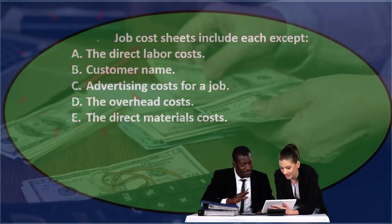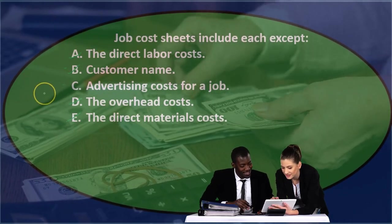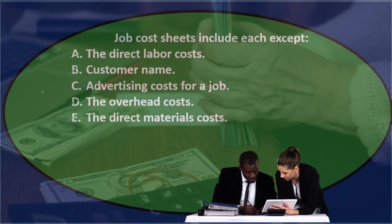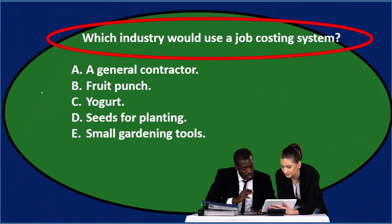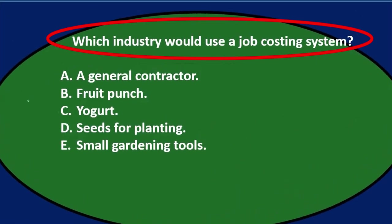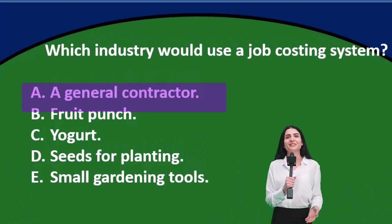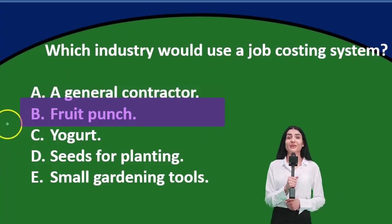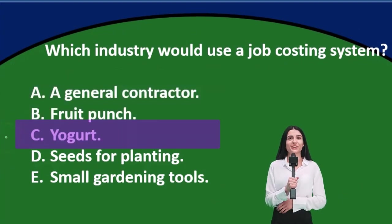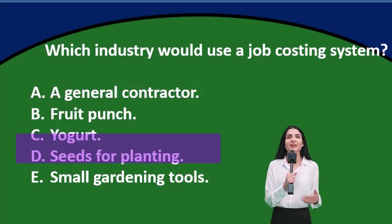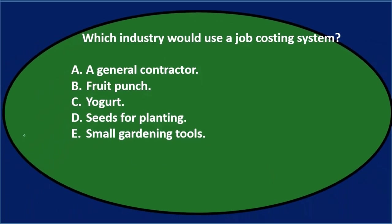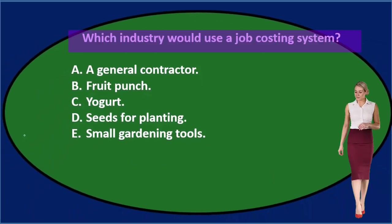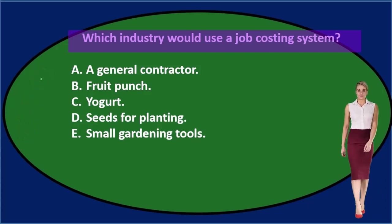Job cost sheets include each except C — advertising costs for a job. Next question: which industry would use a job costing system? A: a general contractor, B: fruit punch production, C: yogurt, D: seeds for planting, E: small gardening tools. Let's go through this again using the process of elimination.